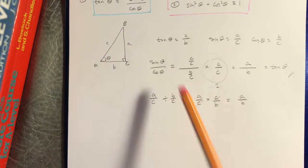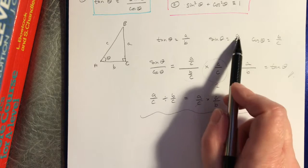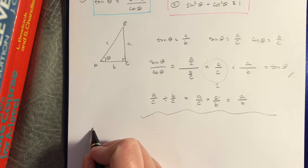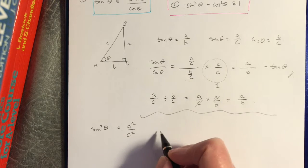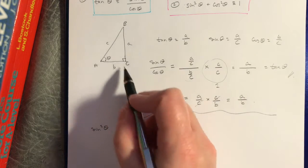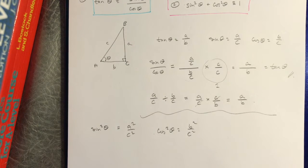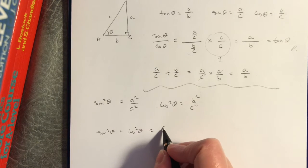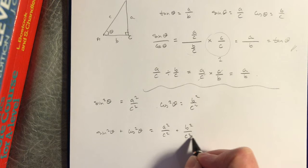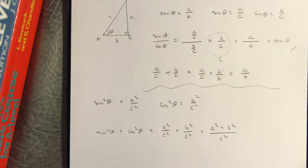I'm going to use my same triangle. The sine of theta can be written as A divided by C, so sine squared theta is A squared over C squared. The cosine squared is B squared over C squared. When I add those together, sine squared theta plus cosine squared theta equals A squared over C squared plus B squared over C squared — same denominator, so that's A squared plus B squared on top and C squared in the denominator. That doesn't quite look like the number one yet.